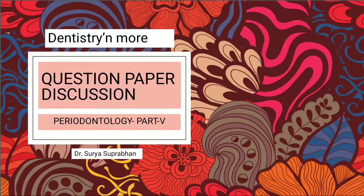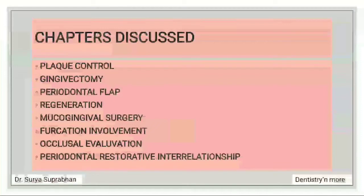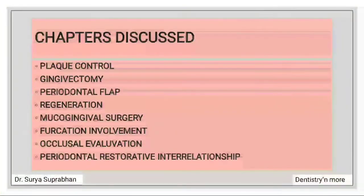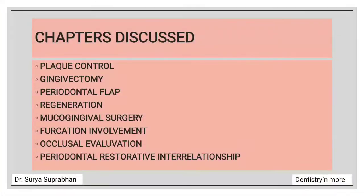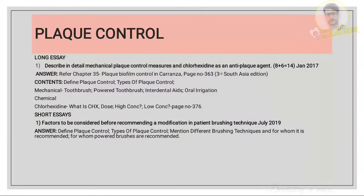Welcome everyone to the final section of the question paper discussion. I'll be discussing the final eight treatment aspect chapters today. The first chapter is plaque control — describe in detail the mechanical plaque control measures and chlorhexidine as an anti-plaque agent. For this, refer to chapter 35, Plaque Biofilm Control, in Carranza, page number 363.